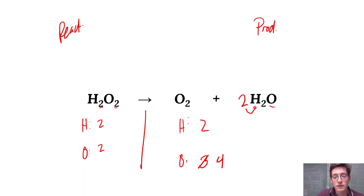But then also that coefficient applies to the hydrogen as well. So I've got two times two hydrogens gives me four hydrogens. So I've made a change here. Oxygens are now an even number, so it's a little easier to work with.